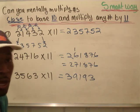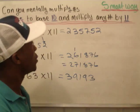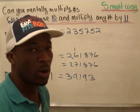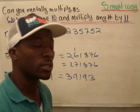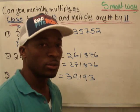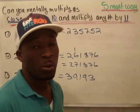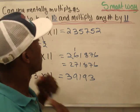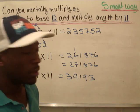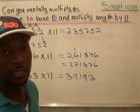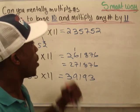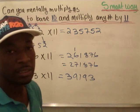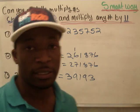And that's how you can mentally work this without even having to write out the work — you just write the answer. Later on, we're going to do squares of numbers — a shorter way to square them — and also multiplying numbers that are close to 100. I hope this helped with the process of multiplication — any number by 11, or multiplying any number close to base 10. Until next time, I'll see you guys later.